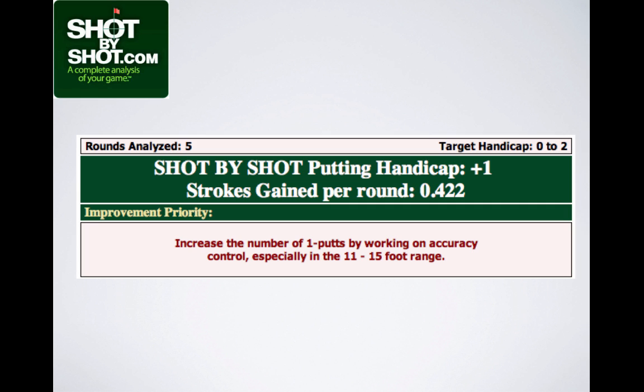When you run an analysis on ShotByShot.com, you will see a strokes gained number for each facet expressed on a per-round basis. Even if you run 5, 10, or 20 rounds, the strokes gained will be expressed as a per-round average — not just because the PGA Tour does it this way, but because it makes sense.